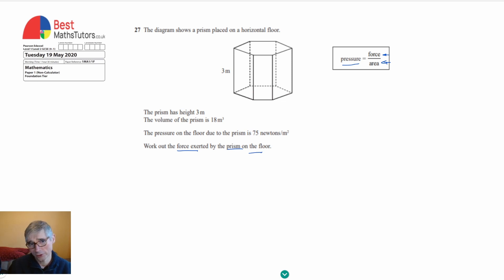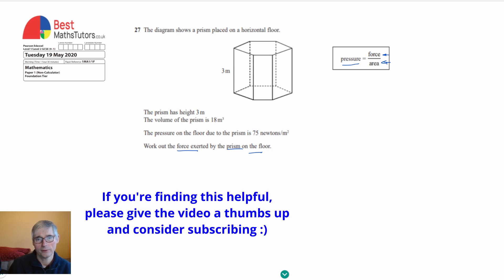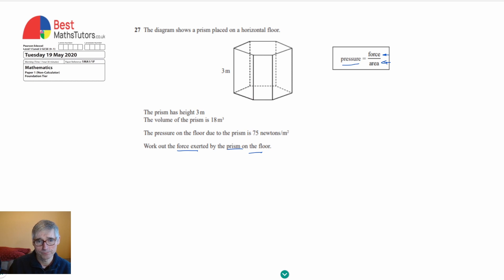The first thing we can do is rearrange this formula. If force over area equals pressure, then if I multiply both sides of this equation by area, I'll get the force. So the rearrangement is that force equals area times pressure.